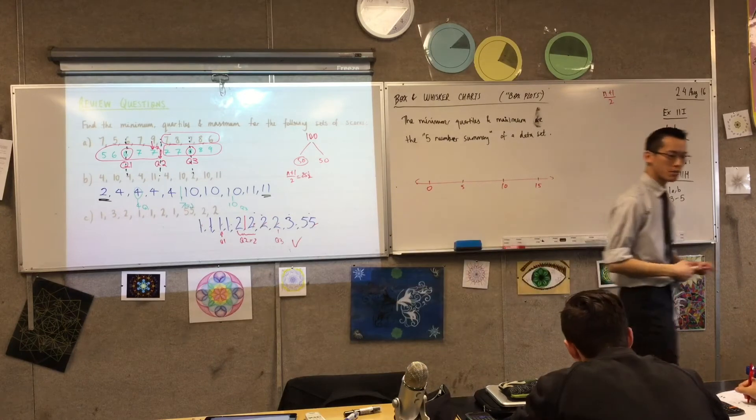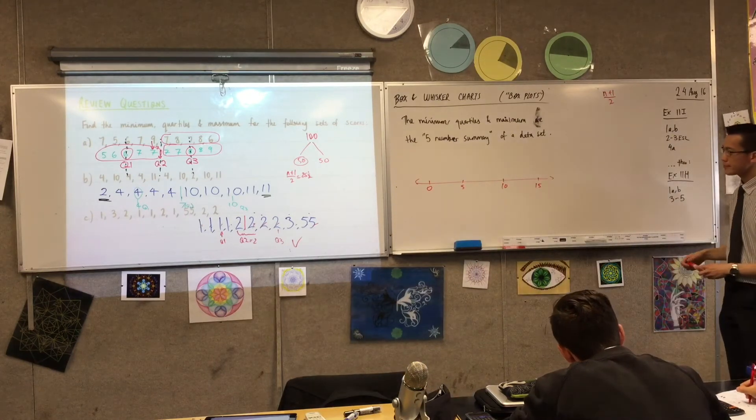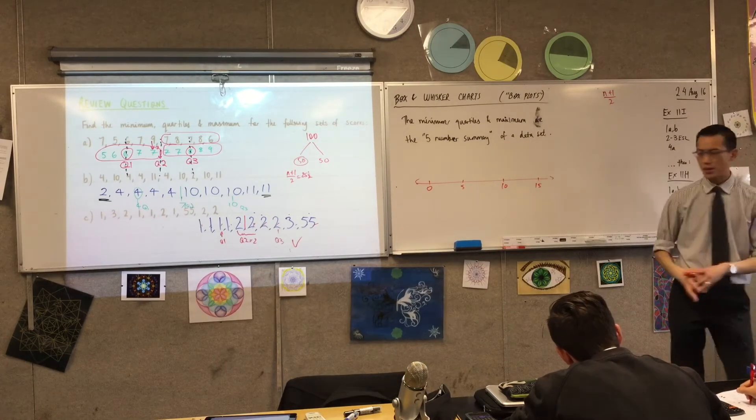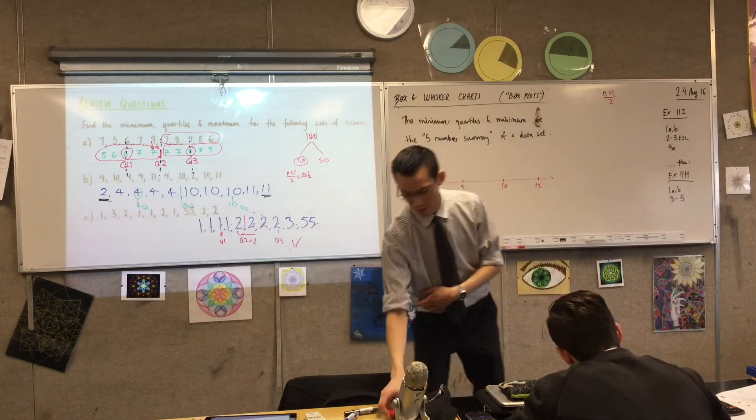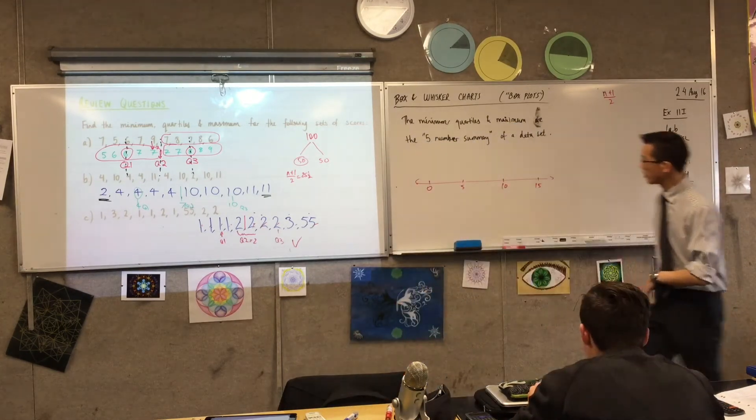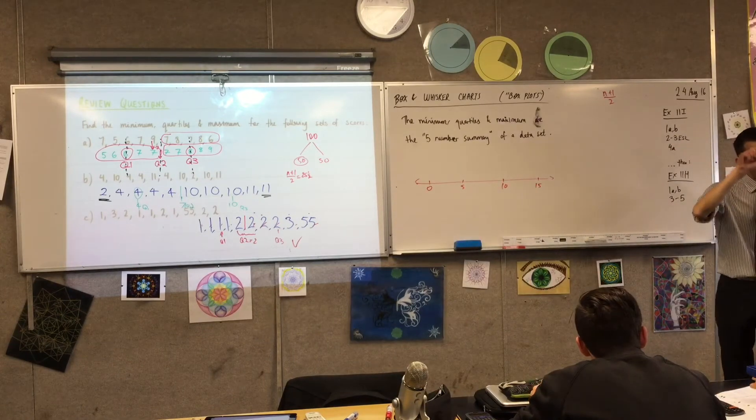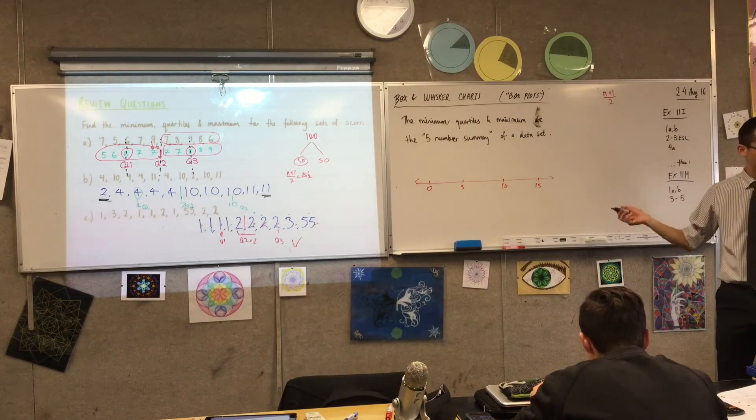So I've chosen my horizontal scale. And then what I'm going to do is I'm going to mark in all 5 of these important numbers onto my horizontal scale here.